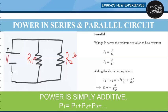Here also we have derived that connecting more components in parallel gives total power Pt = P1 + P2 + P3 and so on. Therefore, whether devices are connected in series or parallel, power is always additive.